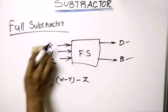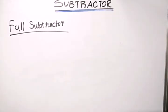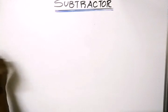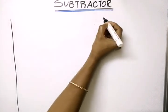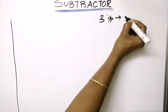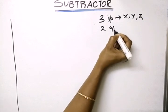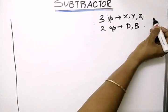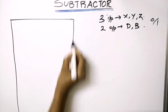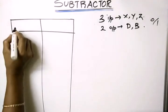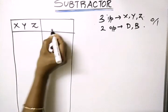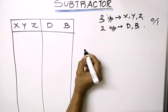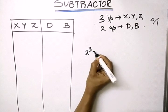We have to design a circuit for the full subtractor by using its truth table, and we have to draw the logic diagram also. The truth table of the full subtractor has three inputs: X, Y, and Z, and two outputs: difference and borrow. These inputs and outputs can be either zero or one.